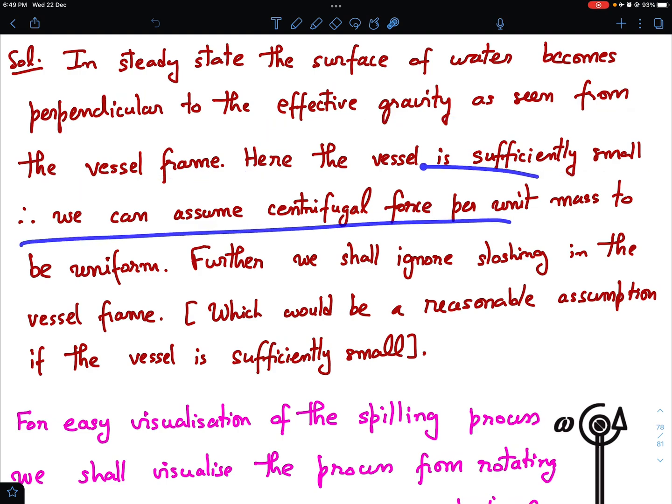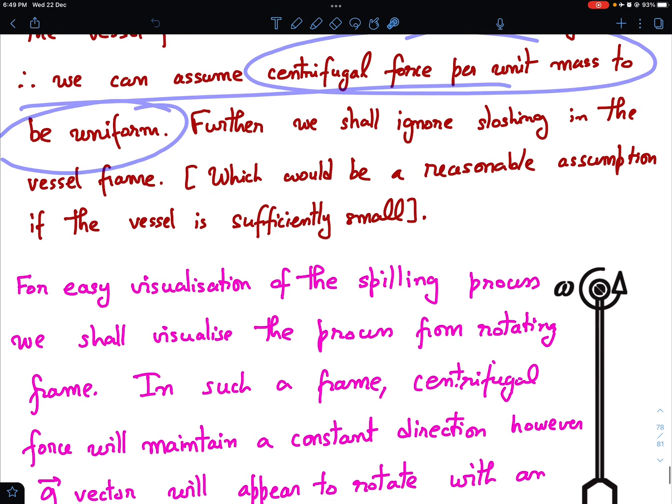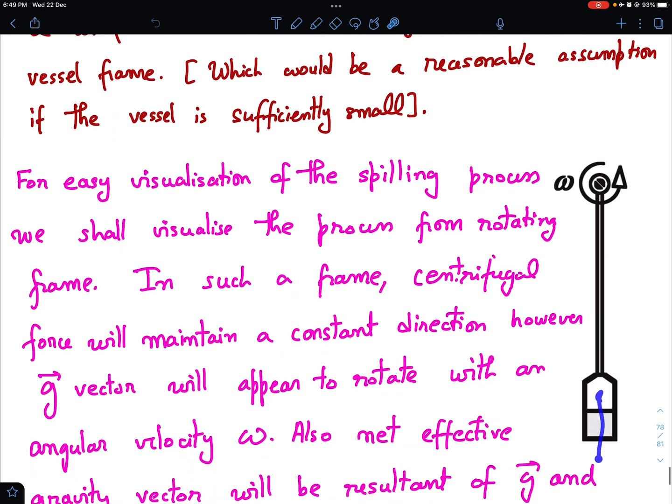Here the vessel is sufficiently small. Therefore, we can assume centrifugal force per unit mass to be uniform. There is some real gravity mg acting on it. And apart from that as the vessel is rotating, there is also centrifugal force acting on it. Effective gravity would be the resultant of the real gravity g vector and centrifugal force that is omega squared l times r cap. R cap is the radially outward vector.